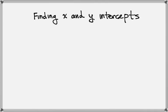In this lesson we're going to learn to find the x and y intercepts of a linear equation. So let's start out with an example equation. We have 2x plus 5y equals 7.